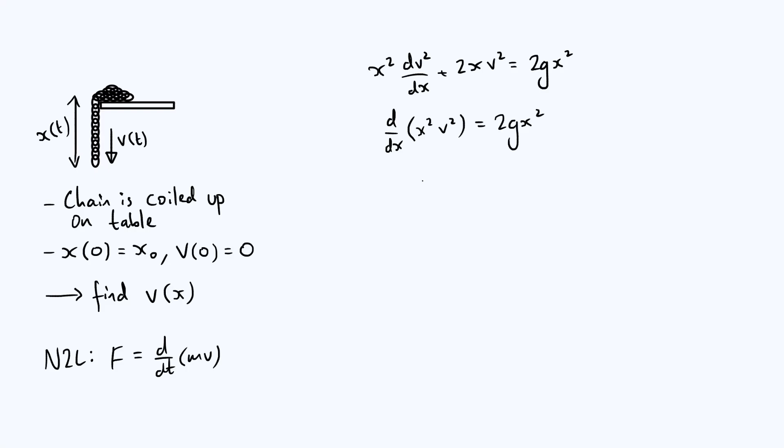And we just keep the right hand side as 2gx², so that makes everything nice and easy to integrate with respect to x, because the left hand side is just x²v², because an integral undoes a derivative. The right hand side, you just use a power rule, and you get ⅔gx³ plus some constant.